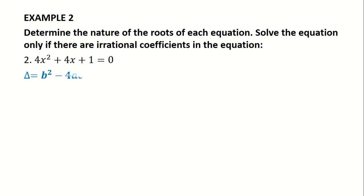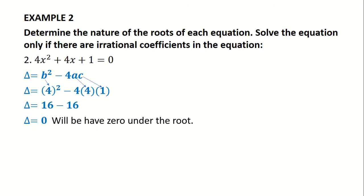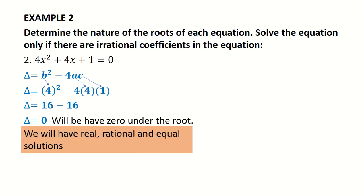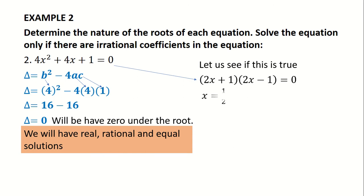Let us look at example 2. B is 4, A is 4, and C is 1. Substituting gives us a delta of 0. If delta equals 0, it means underneath the root I have 0, meaning I'll have real, rational, and equal solutions. Factorizing the equation gives one solution: x equals minus a half. Minus a half is rational and equal — equal because there is only one solution.